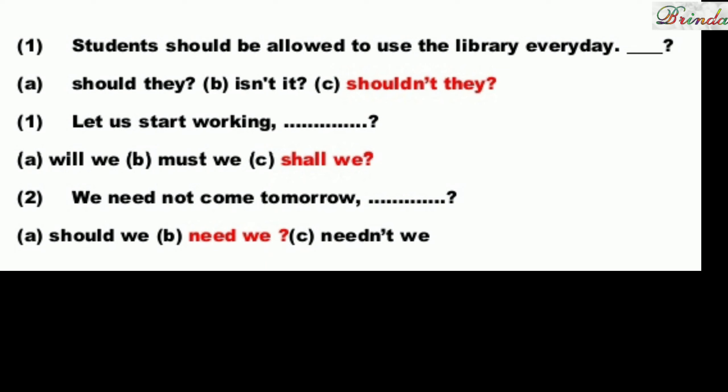Sentence: Students should be allowed to use the library every day. 'Should' is present, so 'should not' gives us 'shouldn't'. Options: shouldn't they, isn't it, shouldn't they. The answer is: shouldn't they.